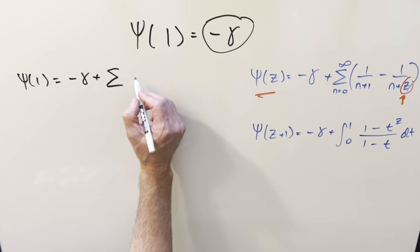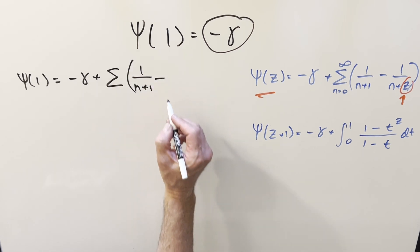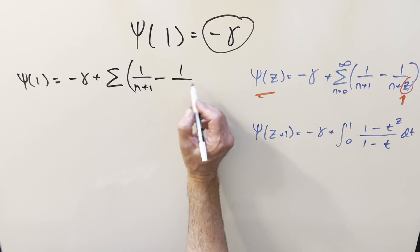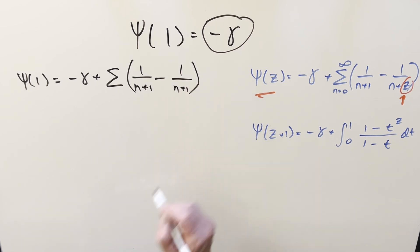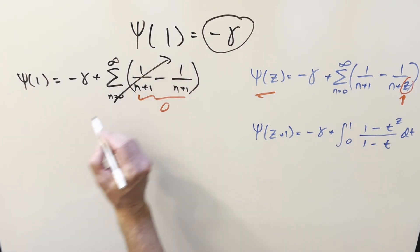of 1 over n plus 1 minus, you plug a 1 in here, we get a 1 over n plus 1. What's going to happen is this right here, this is just going to be a 0. So this part of it just goes away completely, and we get right to our solution minus Euler-Mascheroni constant.